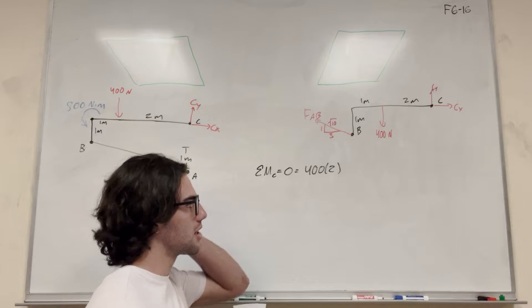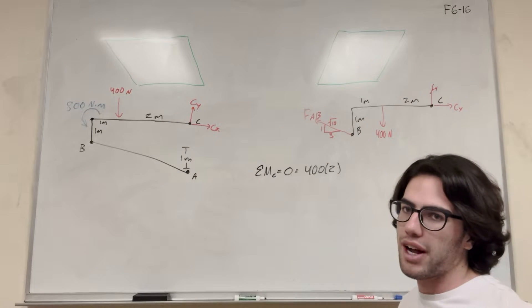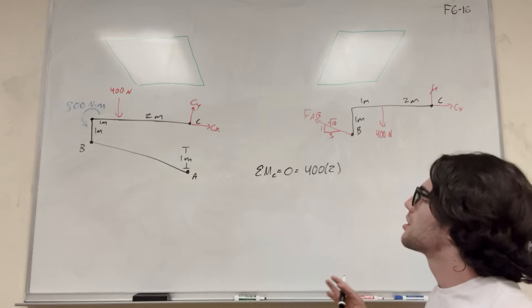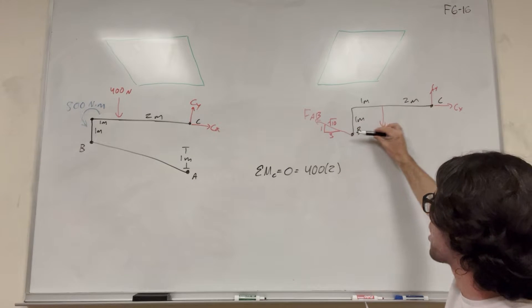If you know how to do the moments, it should be pretty easy at this point. So then we have force AB. Force AB is at an angle, so we're going to have to do the X and the Y. So let's start with the X. The X is going to push this way. So if we're pushing horizontally at B, it's going to make us want to rotate clockwise.